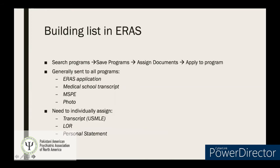Once you've made your Excel sheet, transferring to ERAS is a four-step process: search for programs, select them, save to your program list, assign documents, and then apply. This year you'll be able to start assigning programs and applying on September 1st, but programs won't be able to access applications until September 29th — giving you a 28-day window to apply and assign documents.